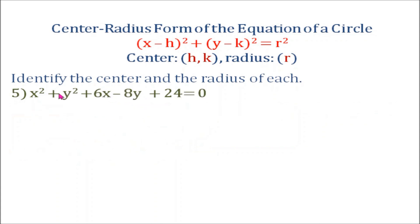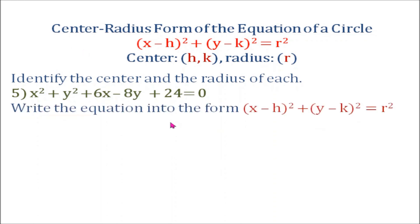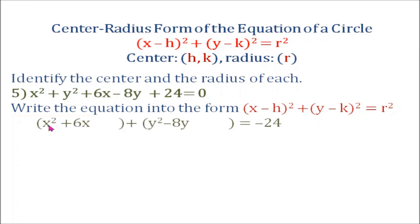Example number five: identify the center and the radius of x squared plus y squared plus 6x minus 8y plus 24 equals 0. This equation is not written in center-radius form. We group together x squared and 6x as the first group, and y squared and negative 8y as the second group, then move the constant to the right side, giving the quantity x squared plus 6x plus the quantity y squared minus 8y equals negative 24. Now we complete the square.